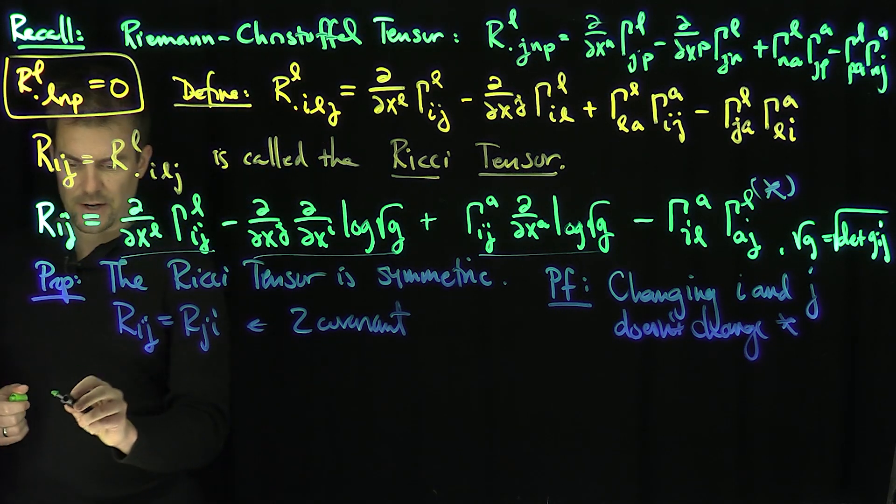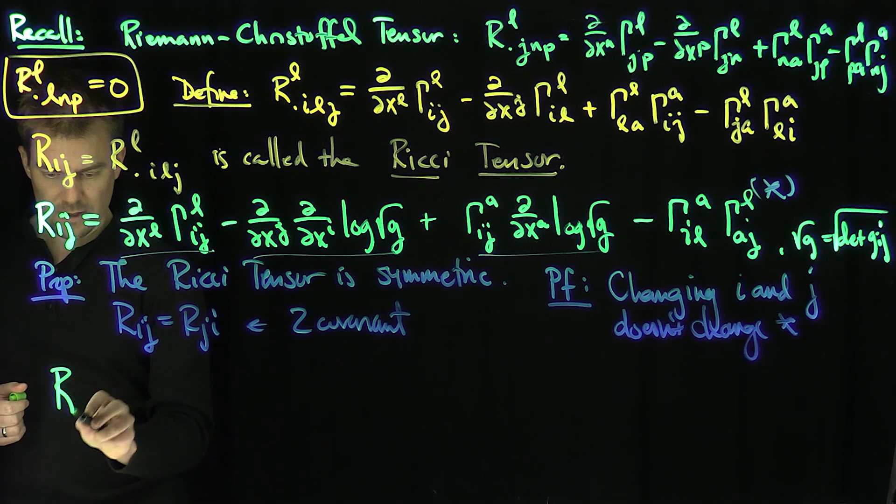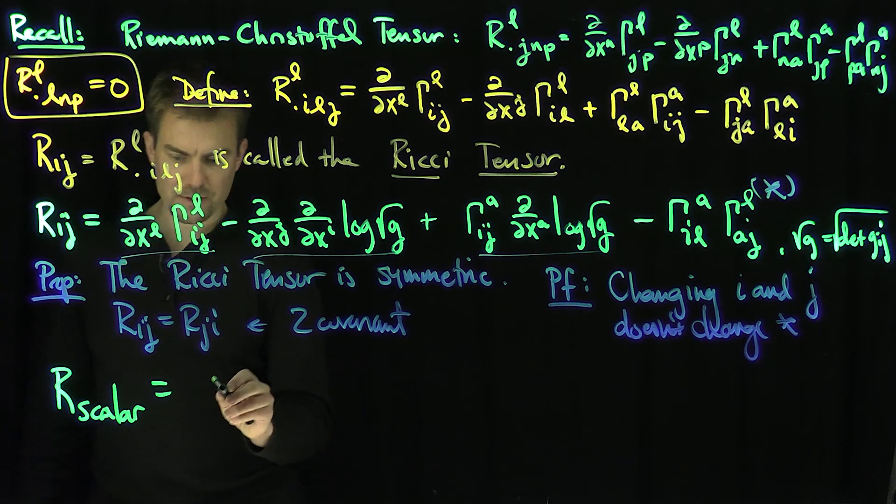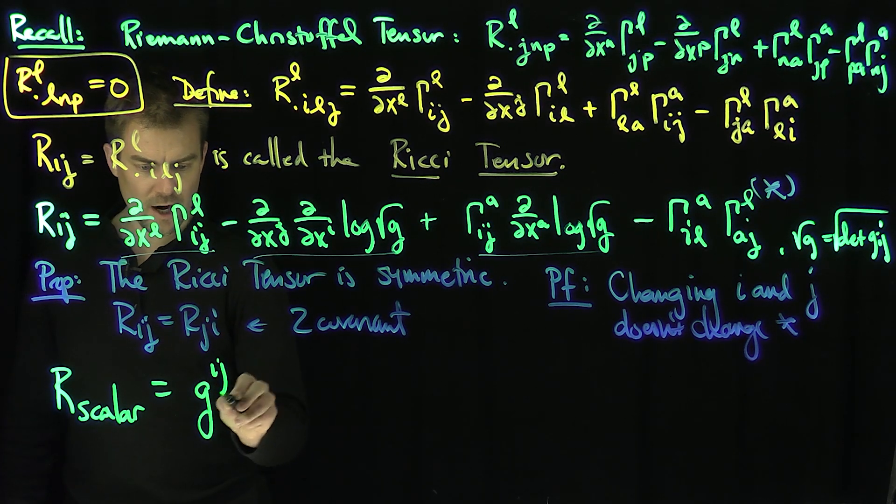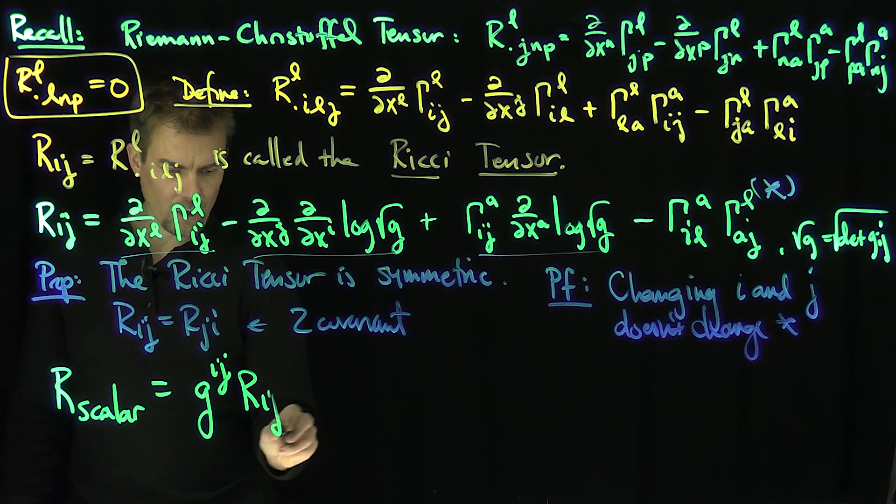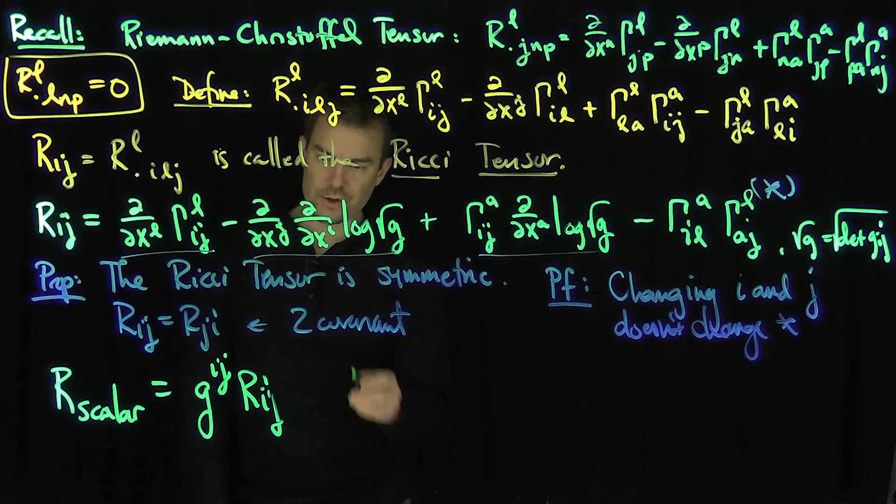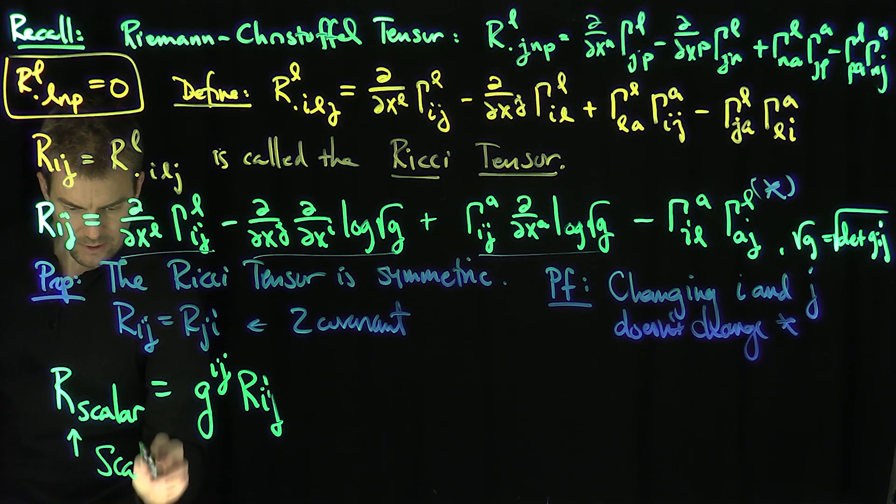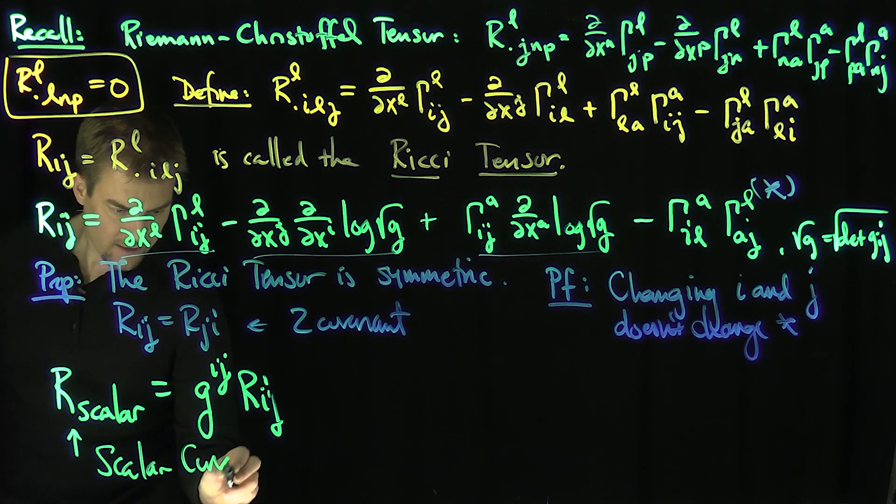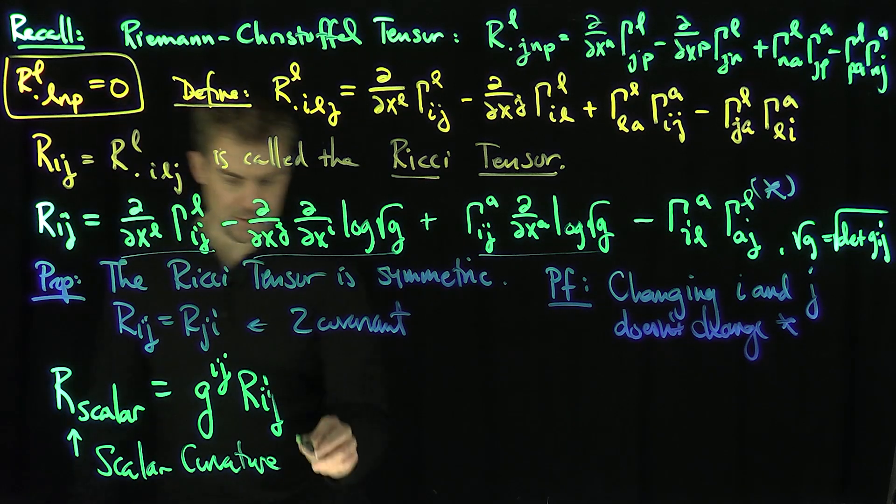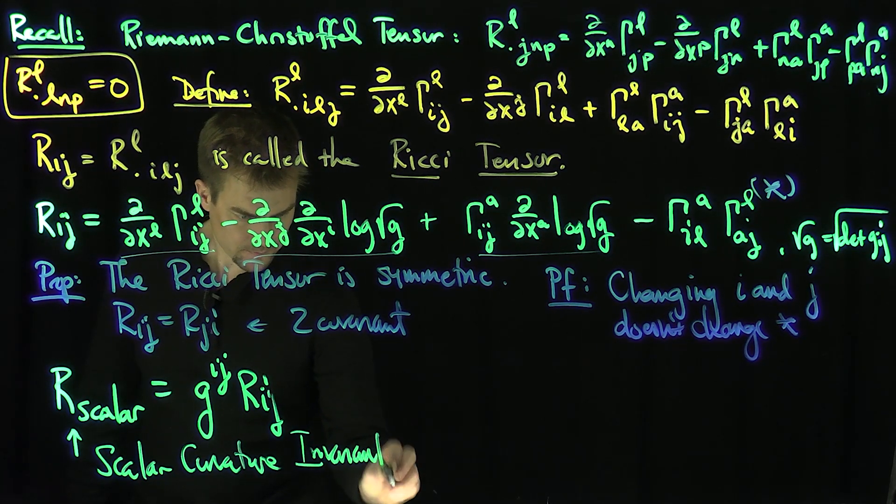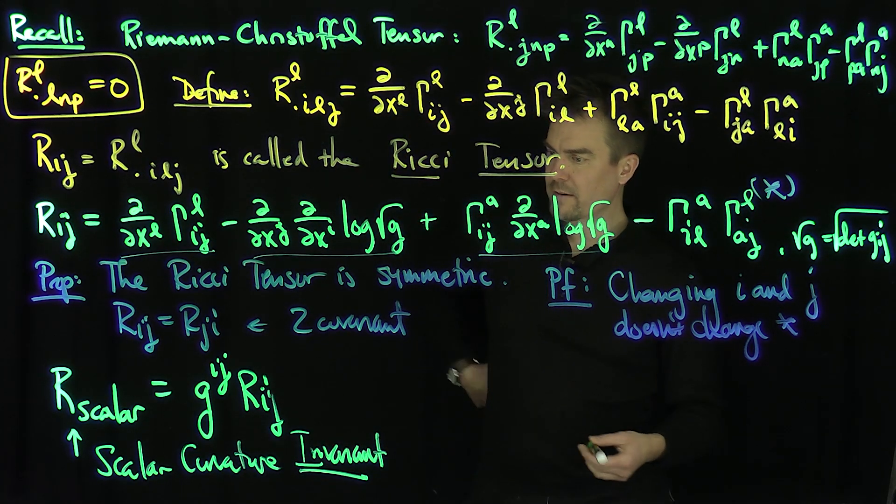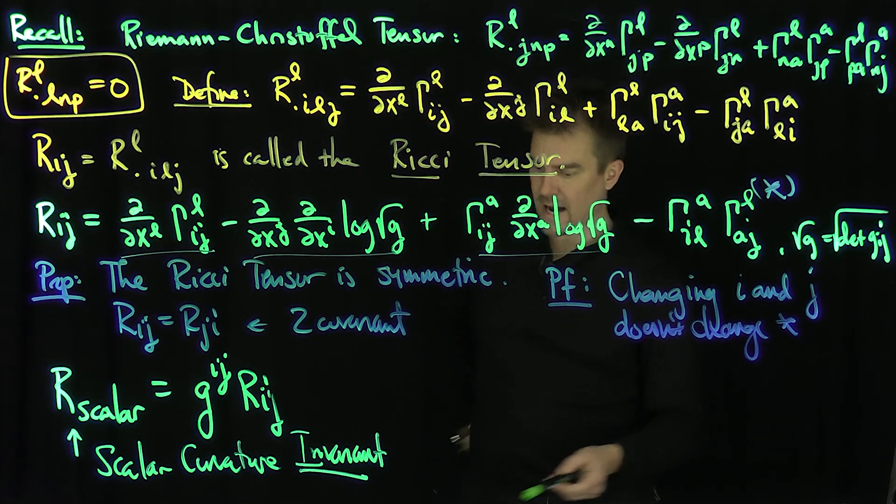So what I can do now is define R_scalar as this invariant. It's going to be G^IJ times R_IJ. So if I trace both the i and the j in the Ricci tensor, this becomes the scalar curvature invariant. In further videos, we're going to see two examples of computing the scalar curvature invariant.